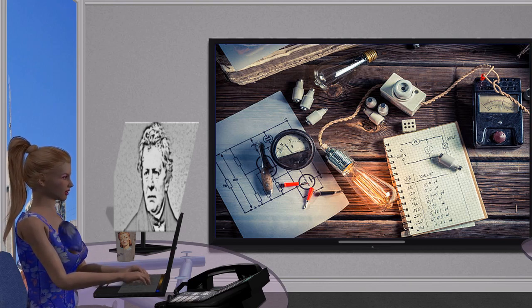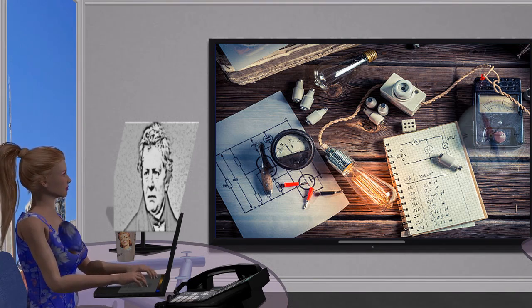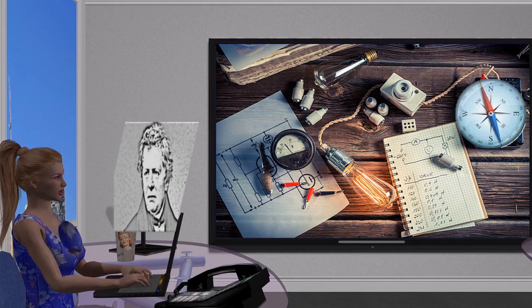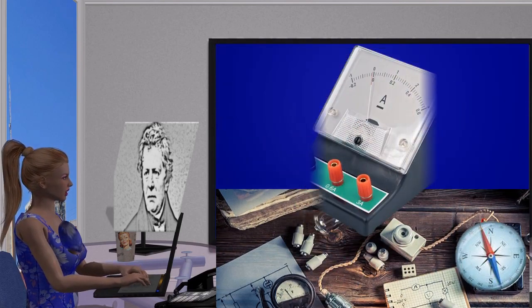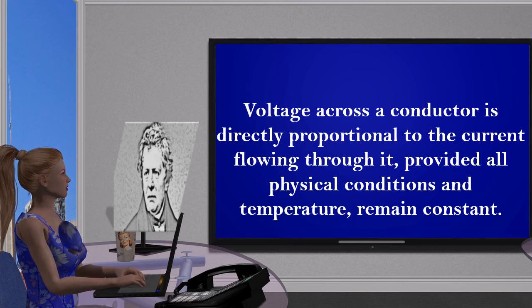As a measure of electrical current, a compass needle was placed near a wire because ammeters had not yet been devised. He found out that the voltage across a conductor is directly proportional to the current flowing through it, provided all the physical conditions and temperature remain constant.